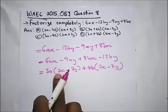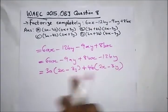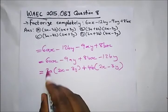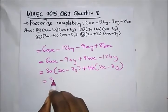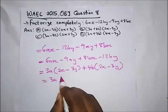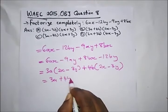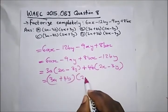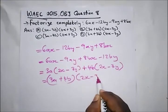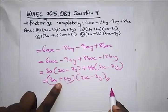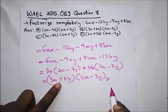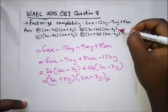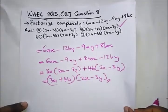Since (2X minus 3Y) is common to both groups, we take it out. We have (3A plus 4B)(2X minus 3Y). This is our answer and the correct option is option B.